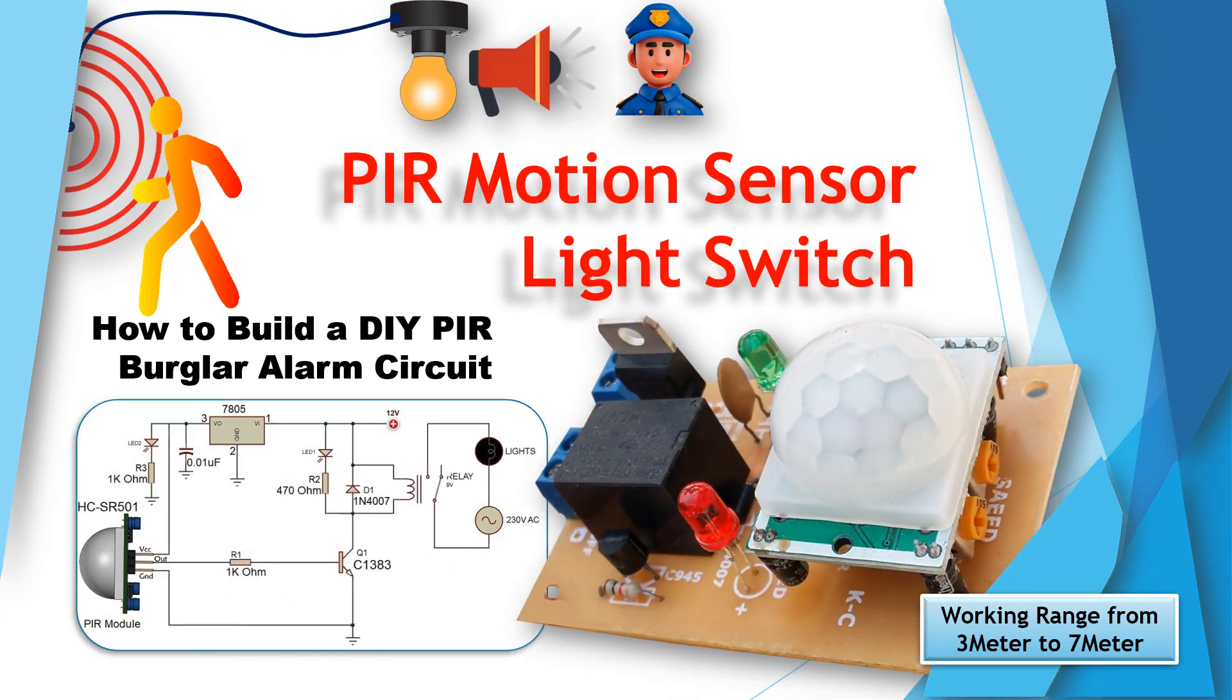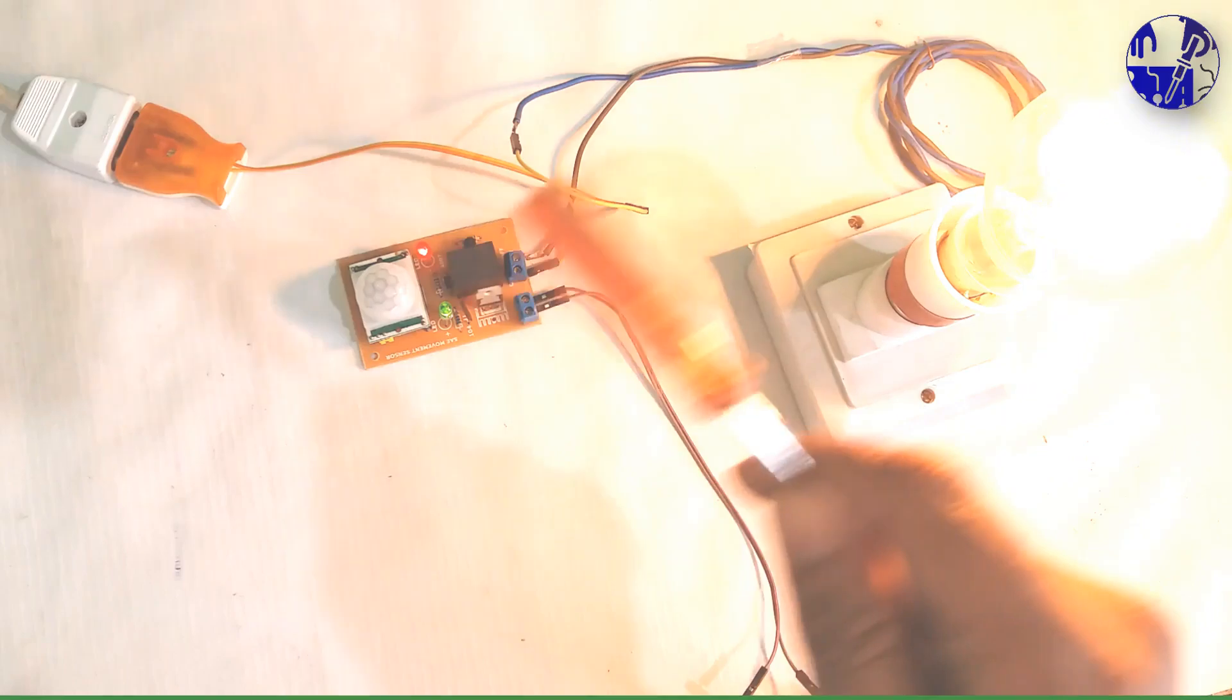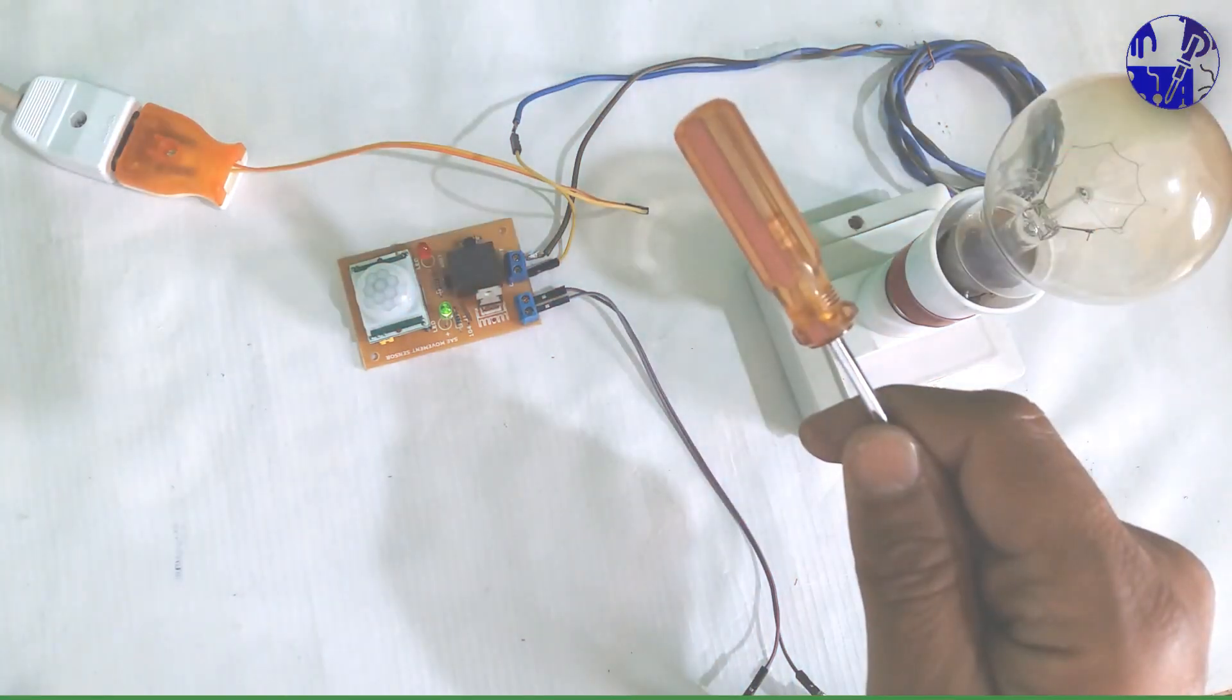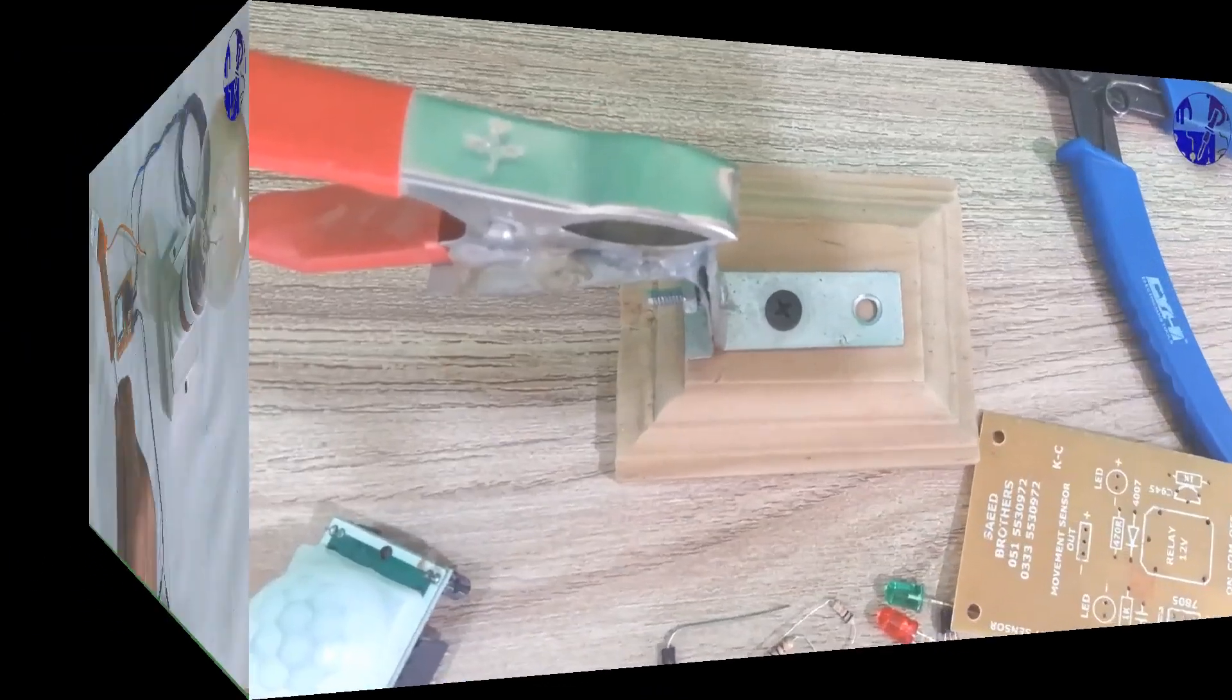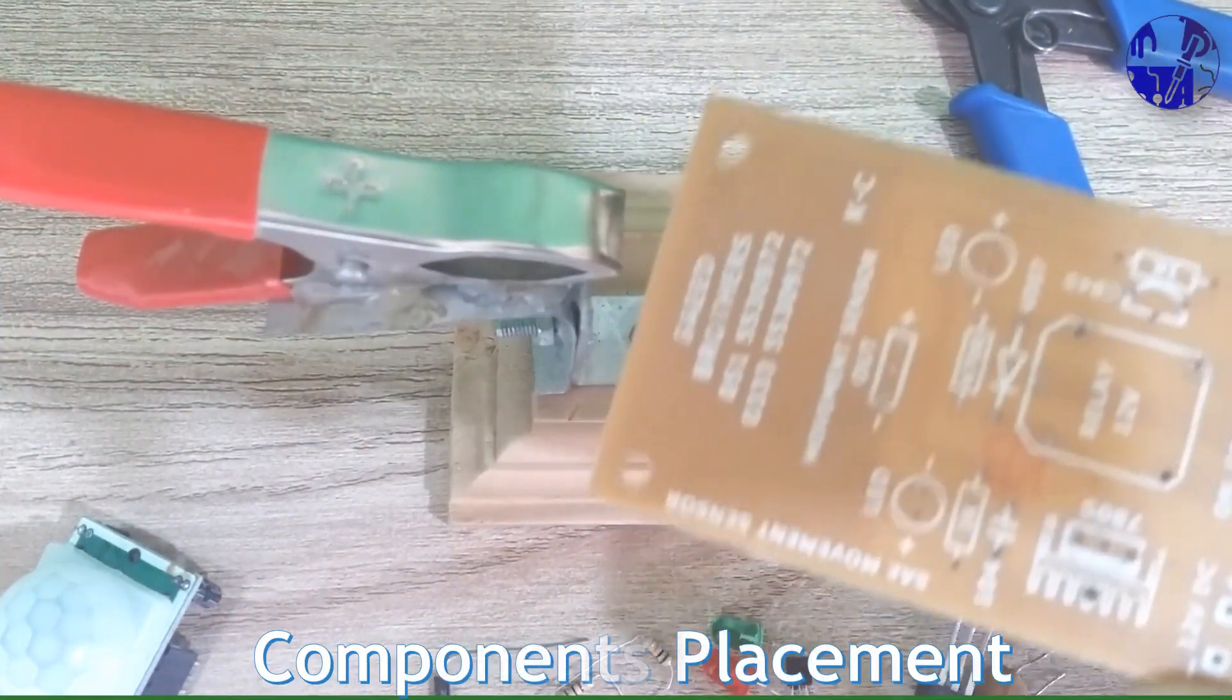Today we're diving into an exciting DIY project: creating a home security light bulb with a warning alarm using a PIR motion sensor. Get ready to enhance your home security system with this simple yet effective project.